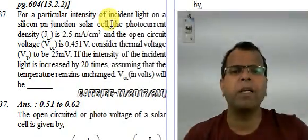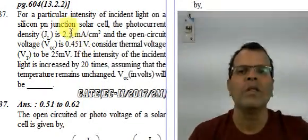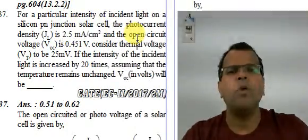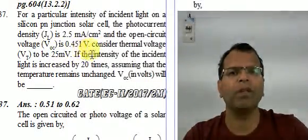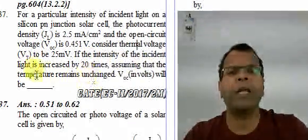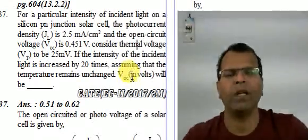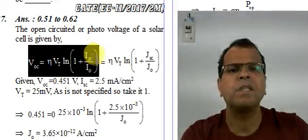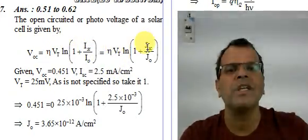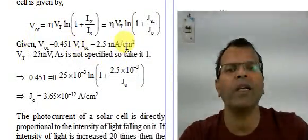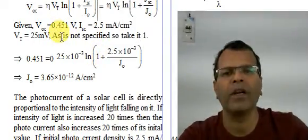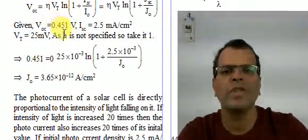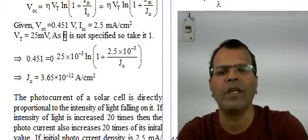For a particular intensity of incident light on a silicon PN junction solar cell, the photo current density is 25 mA/cm², the open circuit voltage is 0.451 volt, and thermal voltage VT is 25 mV. If the intensity is increased 20 times, assuming temperature remains unchanged, what will VOC be? The open circuit voltage of a solar cell is VOC = η·VT · ln(Jph/J0 + 1). Since the ideality factor η is not given, we take η = 1.